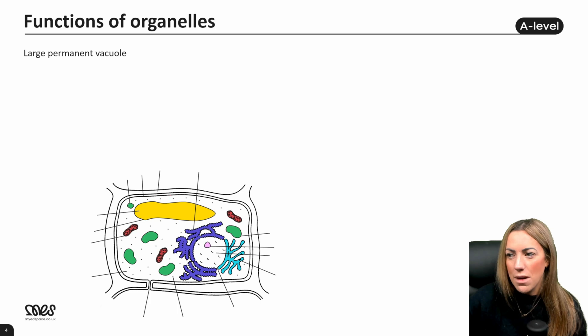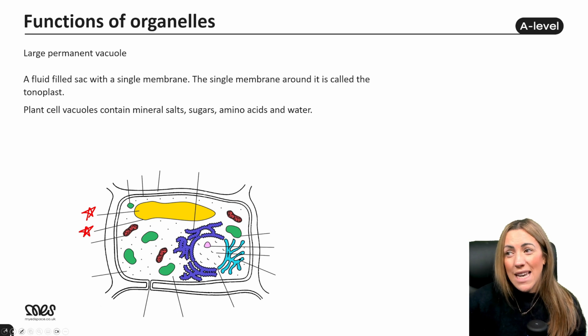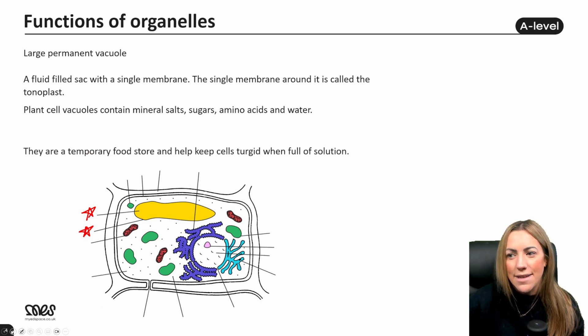Let's have a look at the large permanent vacuole, which we can see here in yellow. So it's a fluid-filled sac. It has a single membrane around its outside which is called the tonoplast. It contains, I think at GCSE we say cell sap, but it contains a mixture of different things: water, sugars, amino acids, and mineral ions.